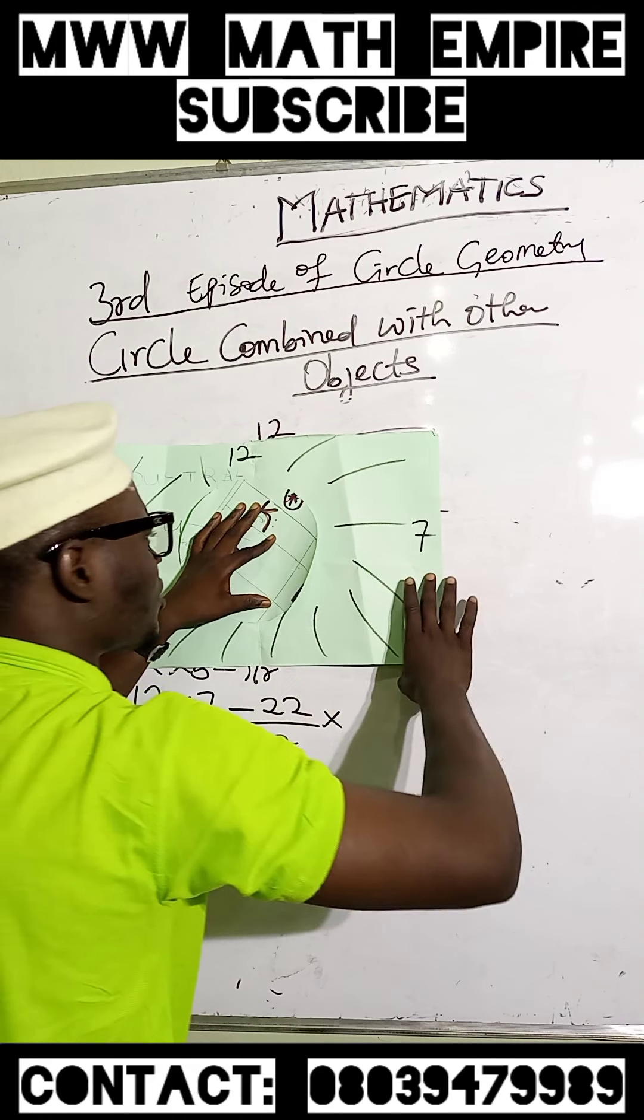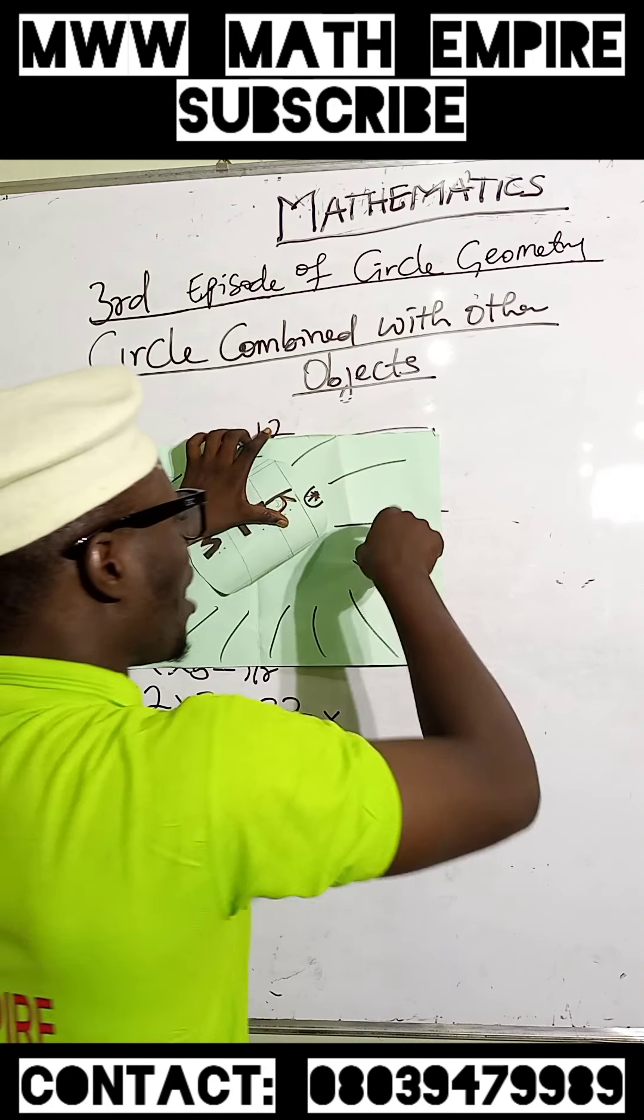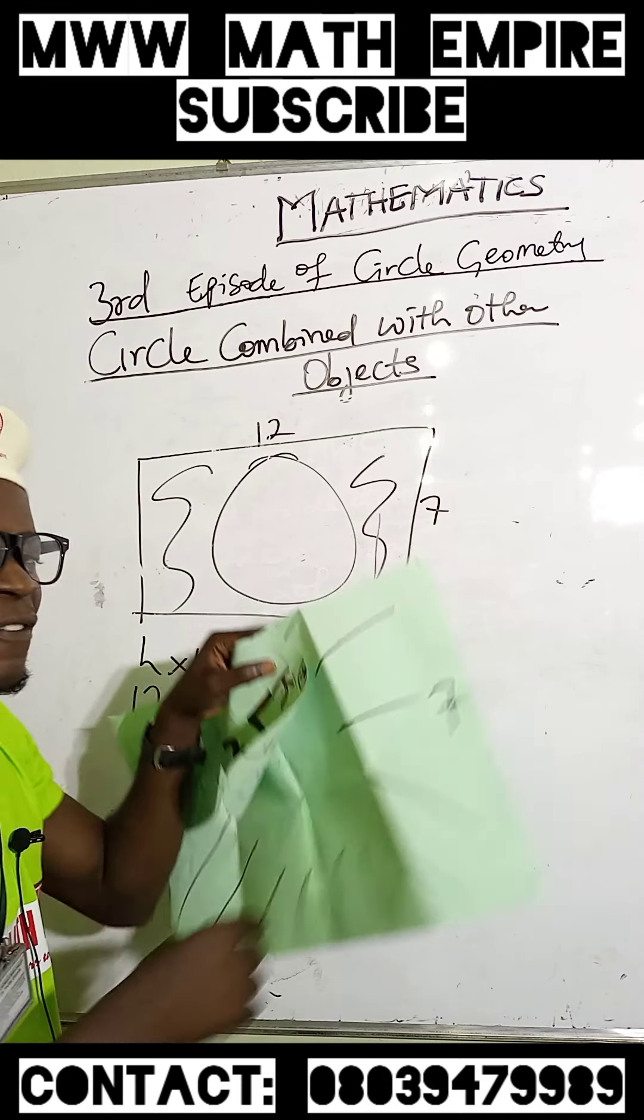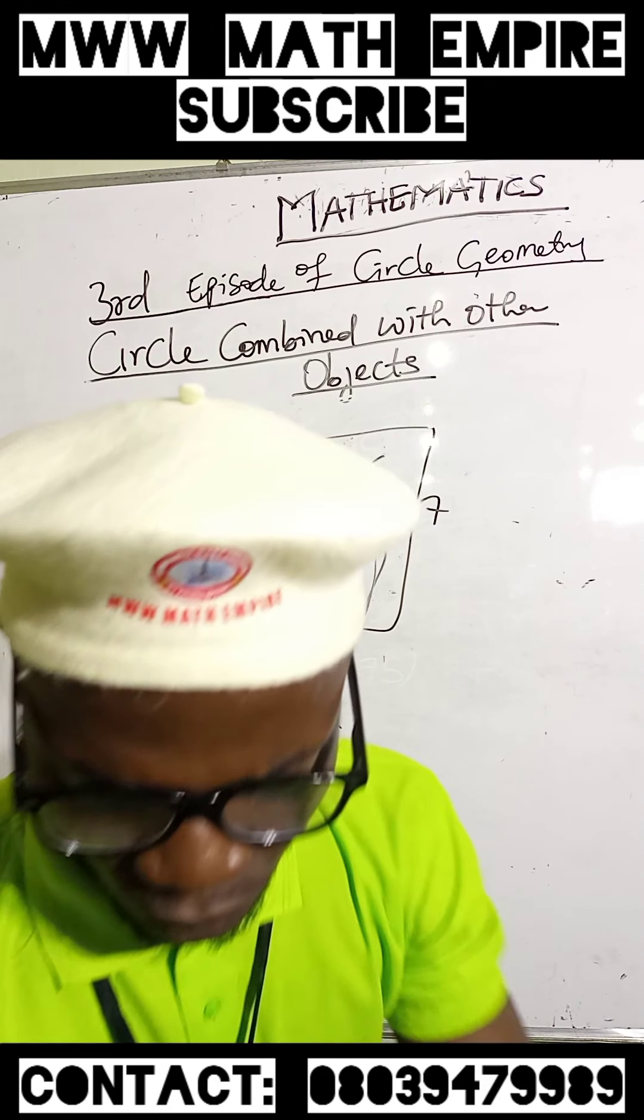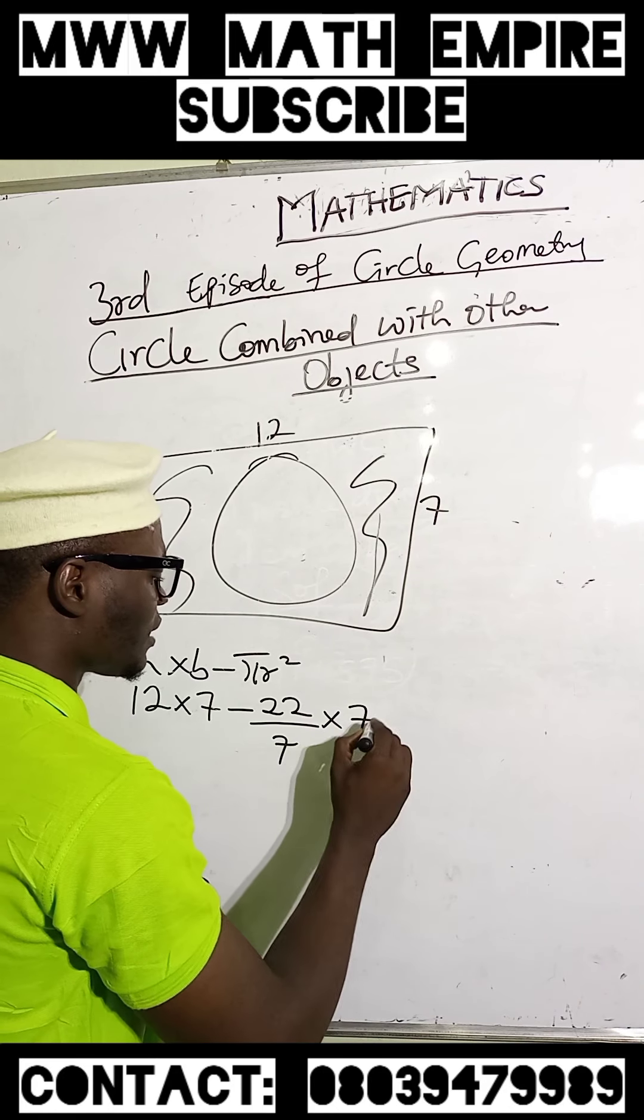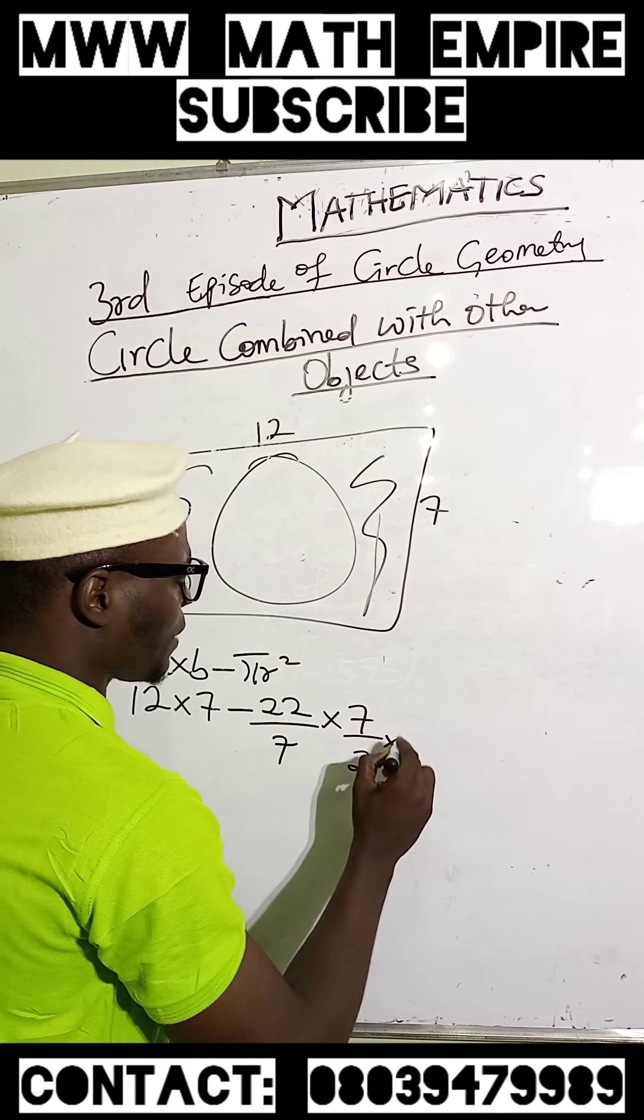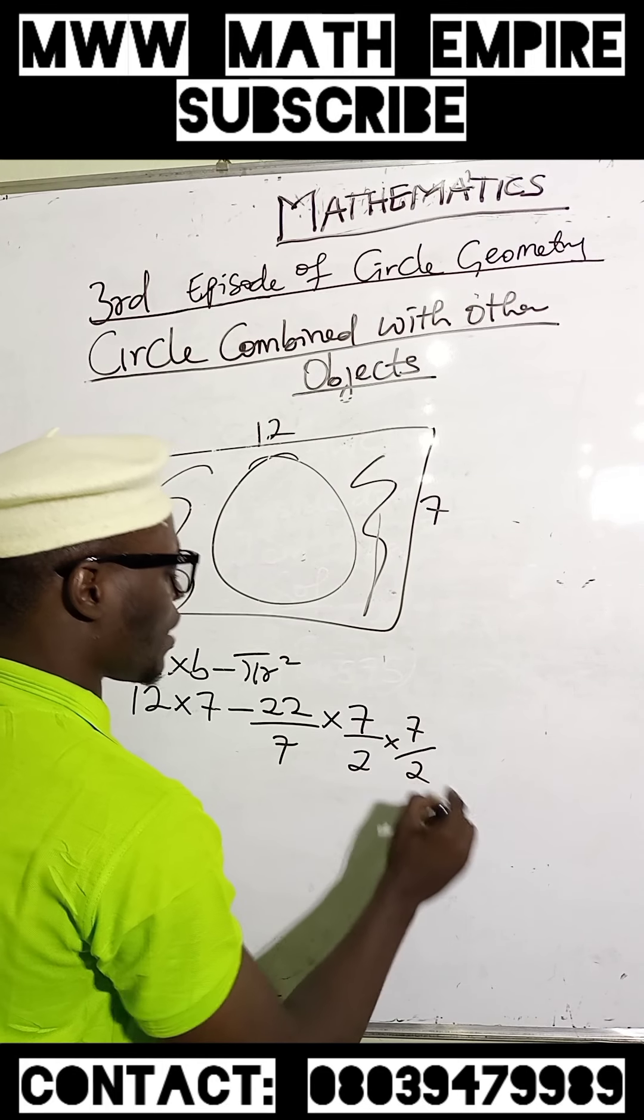The length of this will be the diameter of this circle. Therefore, my radius will be 7 over 2. So I shall have here 7 over 2 multiplied by 7 over 2.